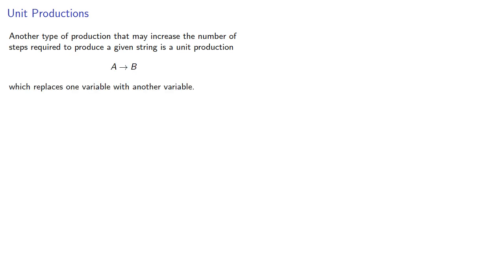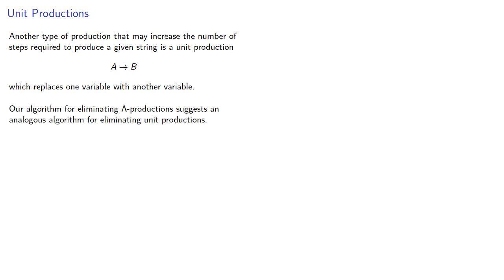Another type of production that may increase the number of steps required to produce a given string is a unit production, which replaces one variable with another variable. Our algorithm for eliminating lambda productions suggests an analogous algorithm for eliminating unit productions. Will it work? Let's find out.